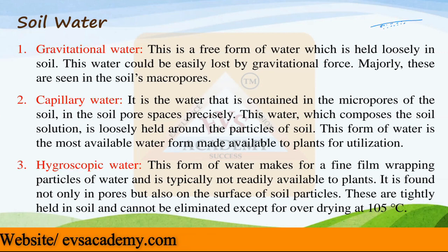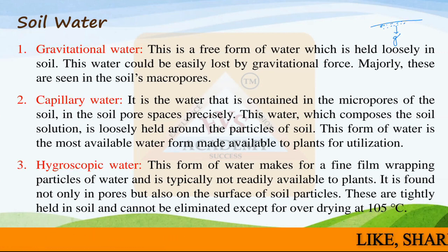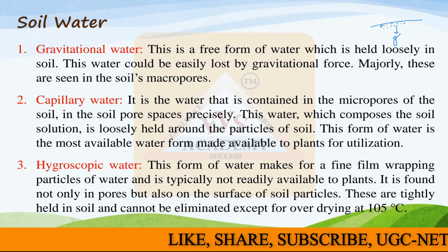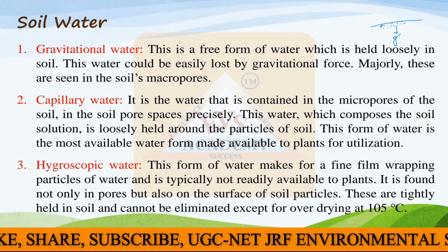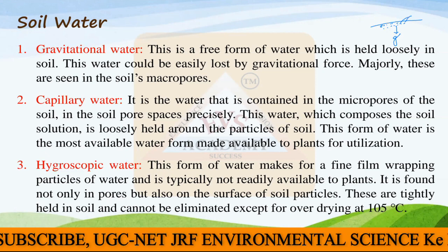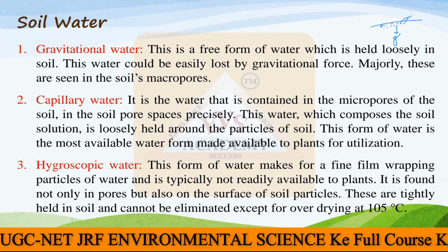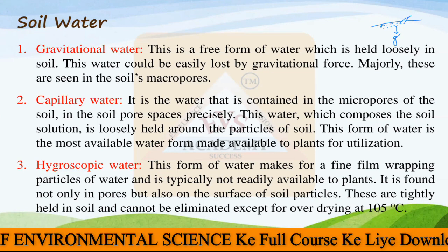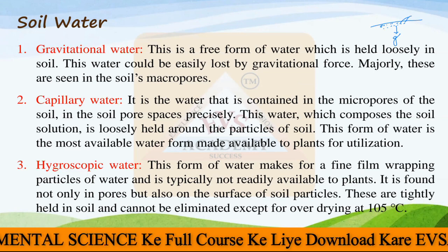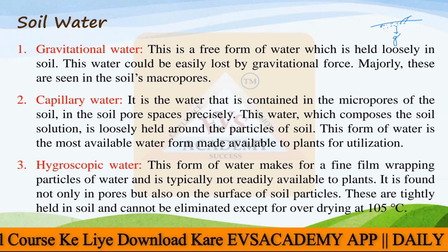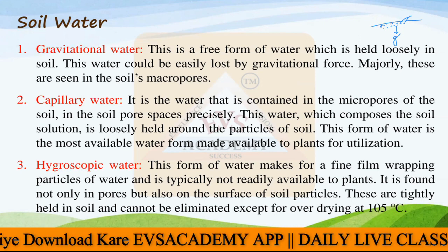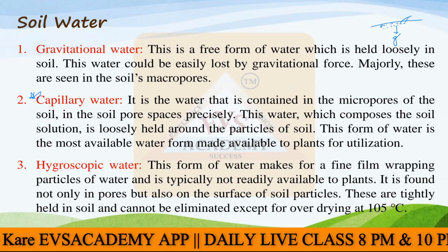Capillary water is held enough that it cannot move down with the help of gravity, but at the same time it is not so strongly held that plants cannot remove it. Plants can absorb this water easily for their growth and development. This is known as capillary water, and it is the most important type of water utilized by plants.